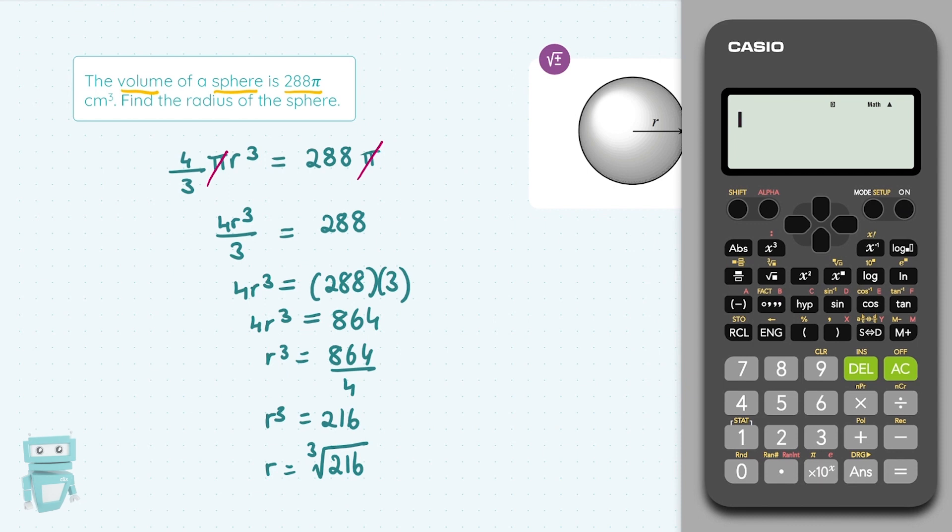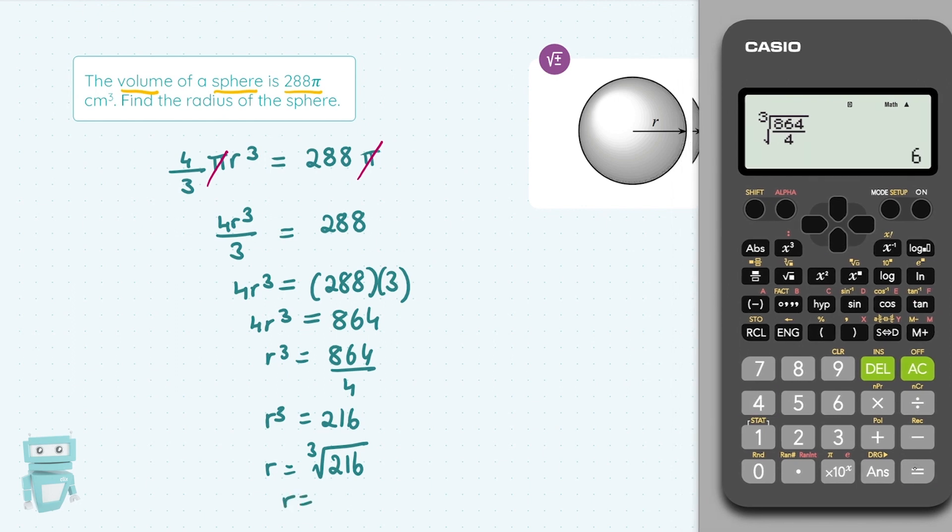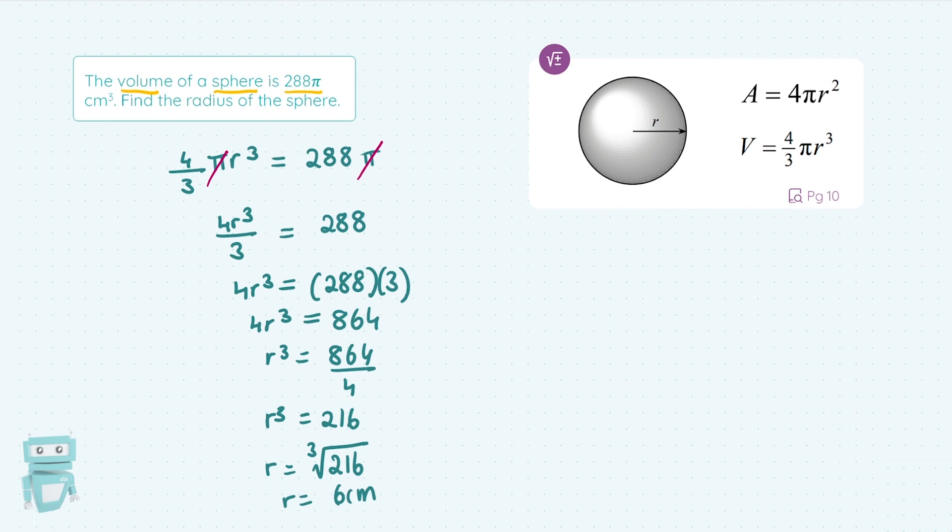Sometimes it doesn't work out nicely. So we'll just enter it as the cube root of this fraction. To get the cube root, yellow button here, shift, and it's just above the square root. We'll type it in as the fraction. And we get 6 centimeters. So the radius of that sphere is 6 centimeters.